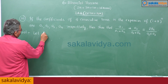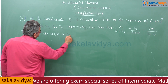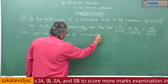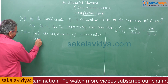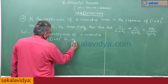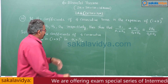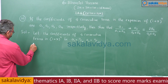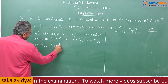Let the coefficients of four consecutive terms in (1 + x) to the power of n be: a1 = nCr, because the general term is nCr · x to the power of r. The next coefficients are a2 = nCr+1, a3 = nCr+2, and a4 = nCr+3.